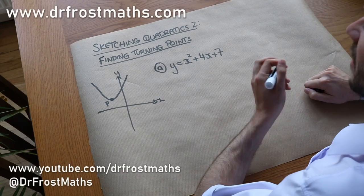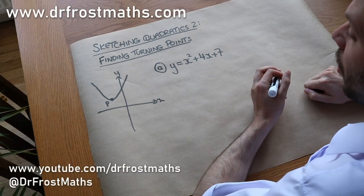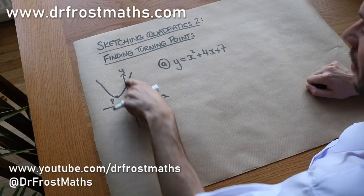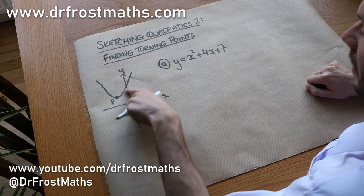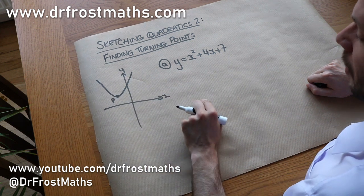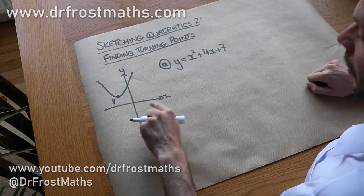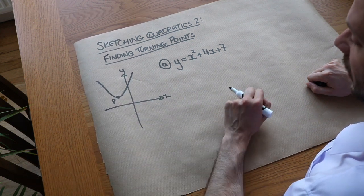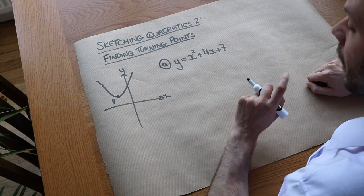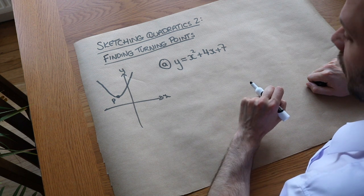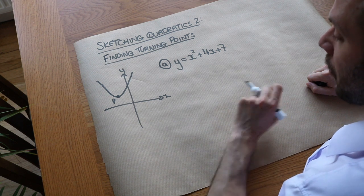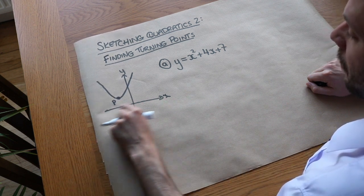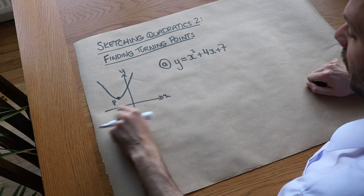In the previous video on sketching quadratics, we looked at how we could find the y-intercept and the x-intercepts of our quadratic graph. Now for some quadratic graphs, the problem is that they never actually intercept the x-axis.